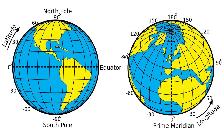Now let's turn our attention to the diagram of the globe on the right-hand side of the screen. You'll notice on this diagram the equator is not labelled, but instead there is a line that runs from the top of our globe, from the North Pole all the way down to the South Pole, which is known as the Prime Meridian. The Prime Meridian is the most important line when it comes to longitude because it tells us how far east or west we are in relation to that line.